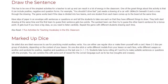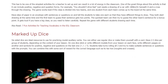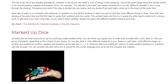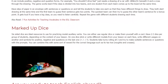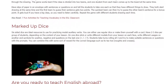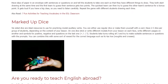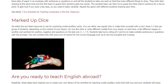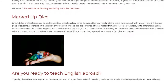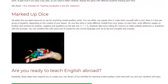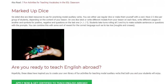The game works best if the class is divided into two teams and one student from each team comes up to the board at the same time. Have slips of paper in an envelope with sentences or questions on and tell the students to take one each so that they have different things to draw. They both start drawing at the same time and the first team to guess their sentence gets two points. The quickest team can then try to guess the other team's sentence for a bonus point. It gets loud if you have a big class, so you need to listen carefully.